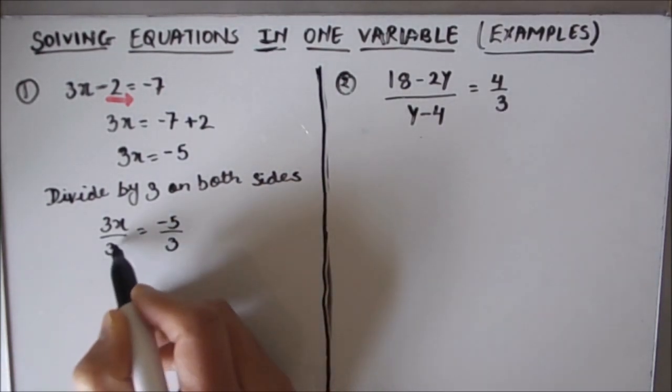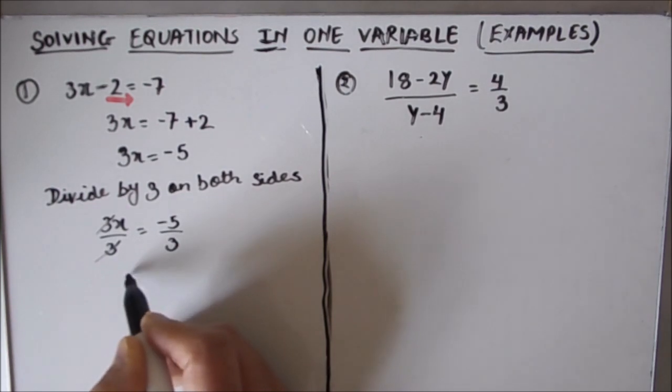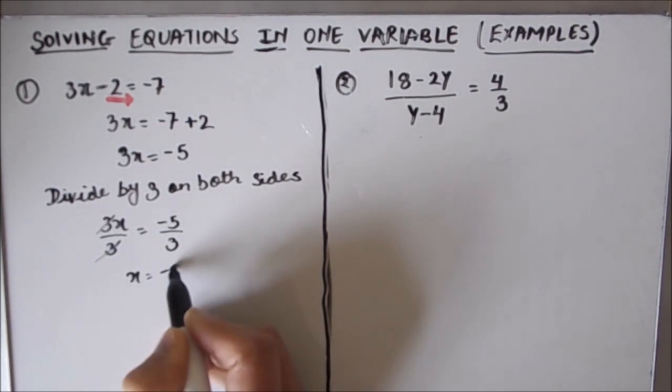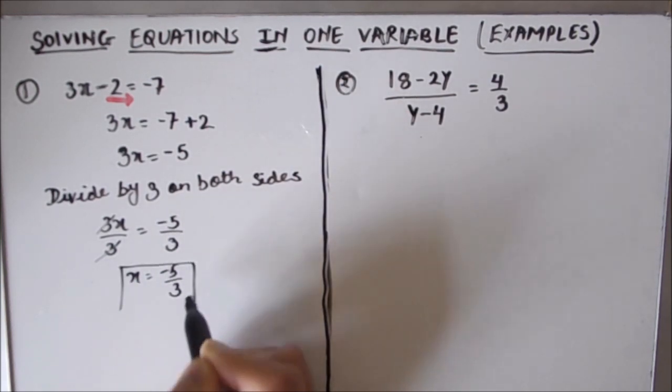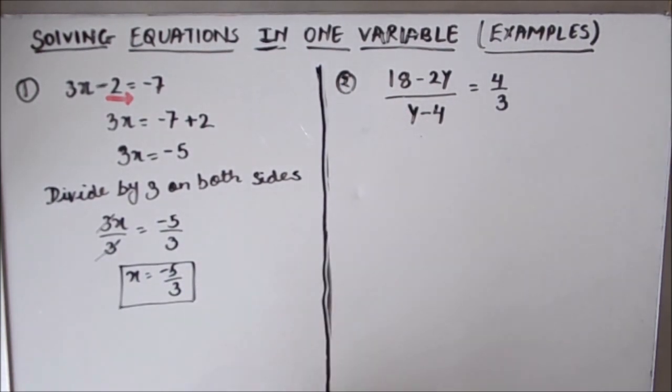So this will be 3x over 3 and this will be minus 5 over 3. This 3 gets cancelled here, so x will equal minus 5 by 3. So this is the value of the variable, and this is how we solve the equation.